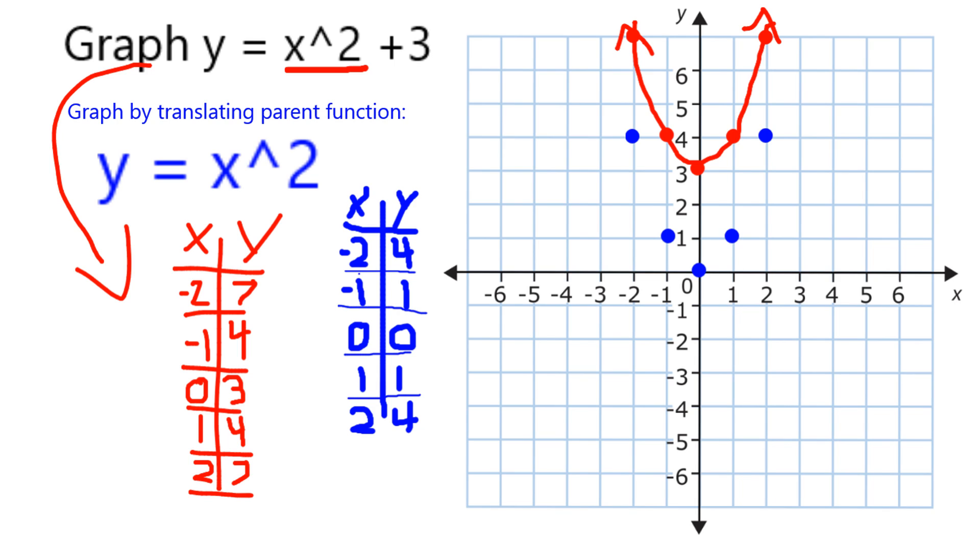So I want to reiterate that this graph, y equals x squared plus 3, is going to simply be a translation of my parent quadratic, y equals x squared, which shape I should become very familiar with.